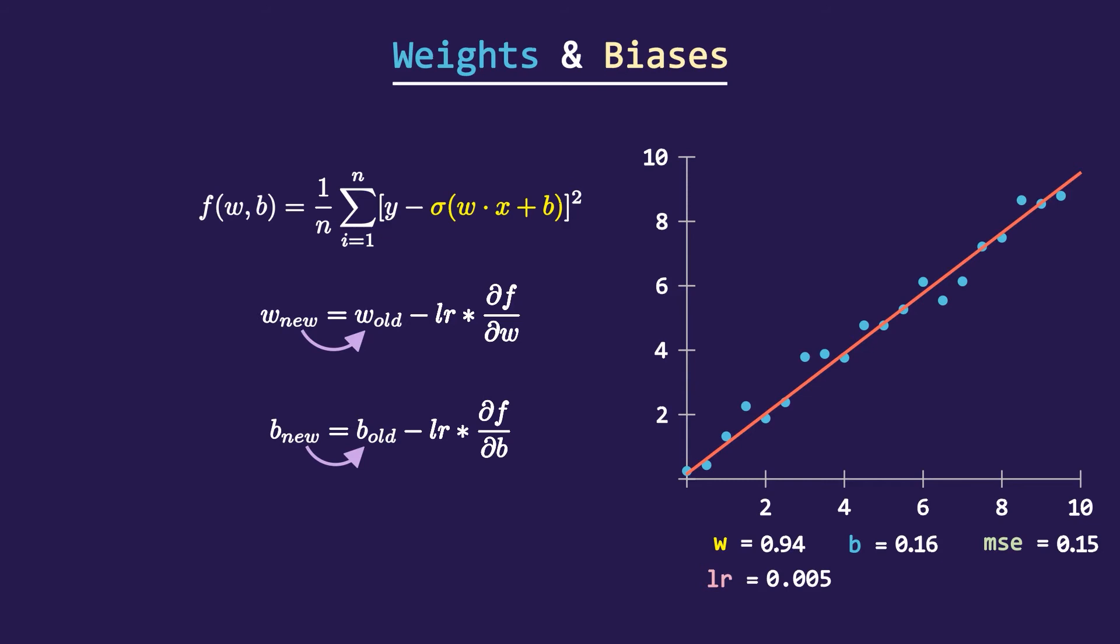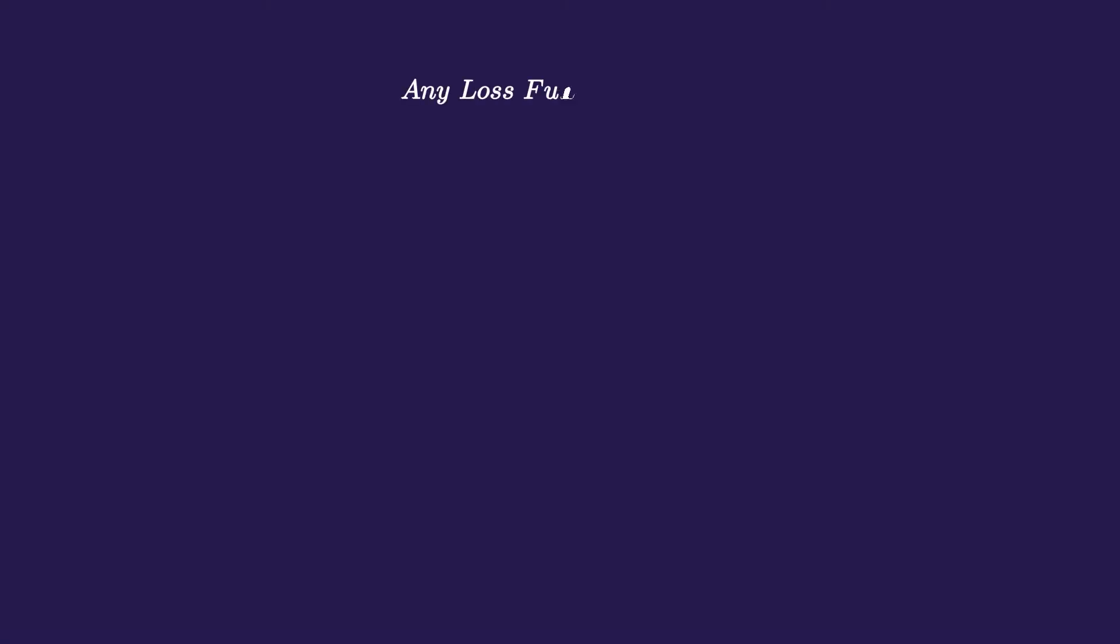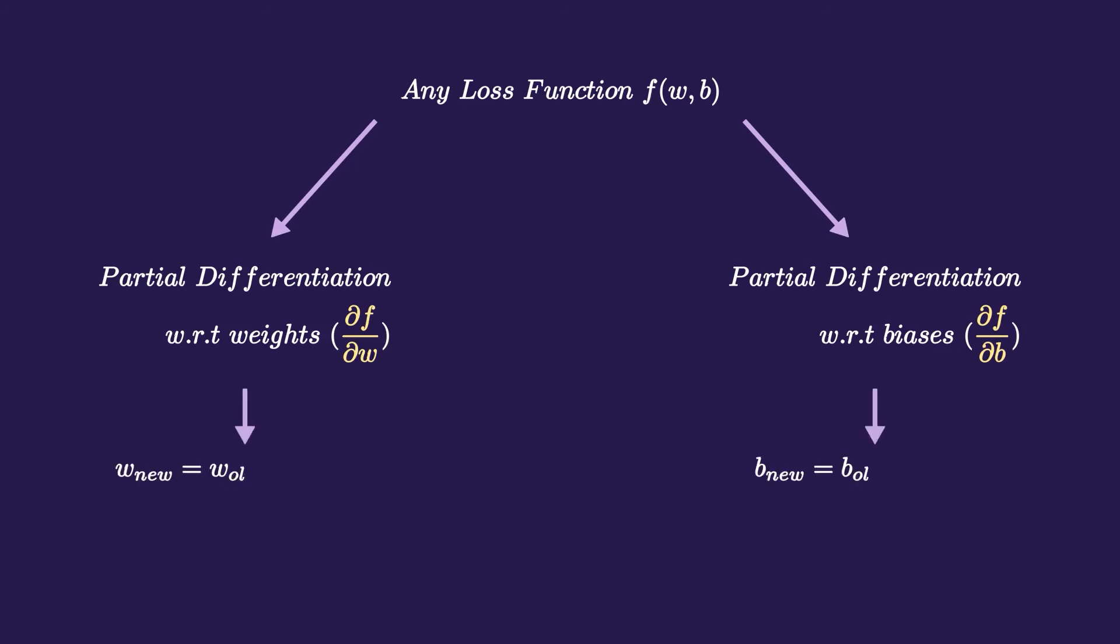If there might be any data instead of this, gradient descent works exactly the same way. The general way to calculate gradient descent is as follows: first we will take any loss function f and then partially differentiate it with weights and biases which are also known as gradients. Then we can use these gradients to update weights and biases so as to reduce the loss function f.